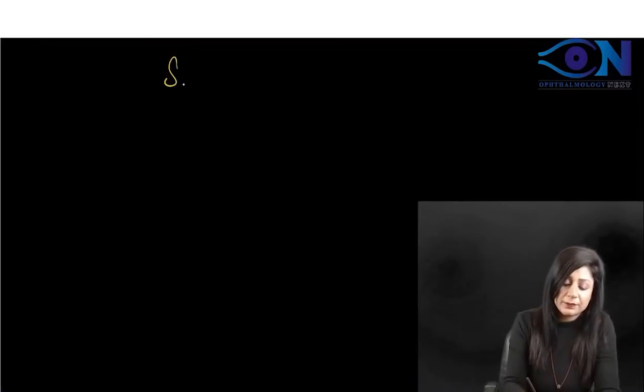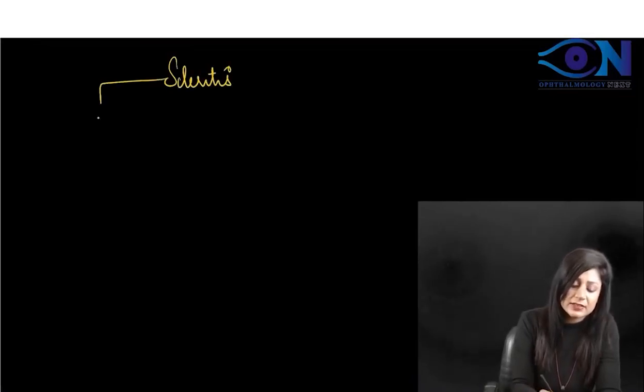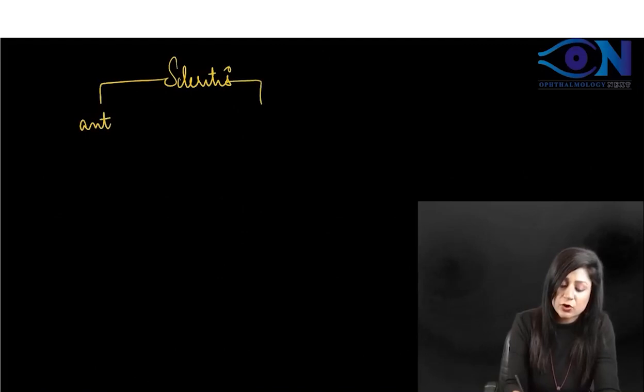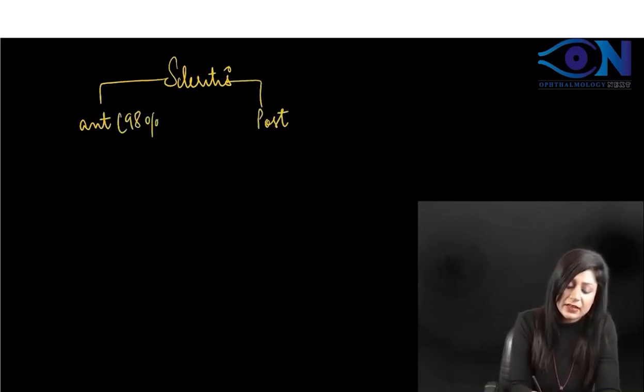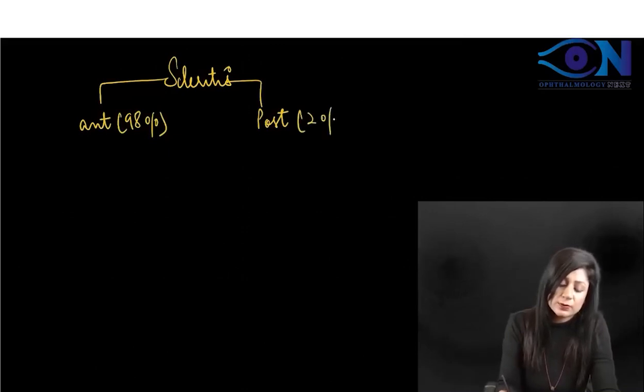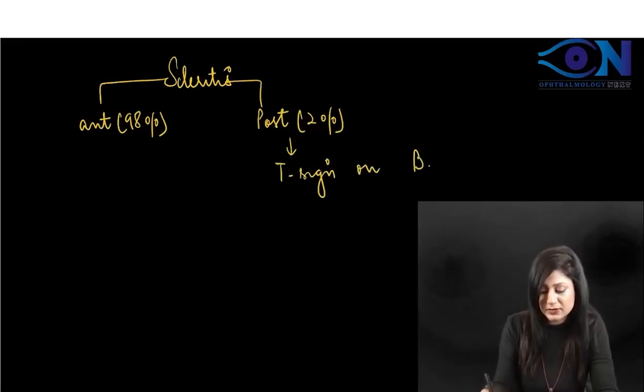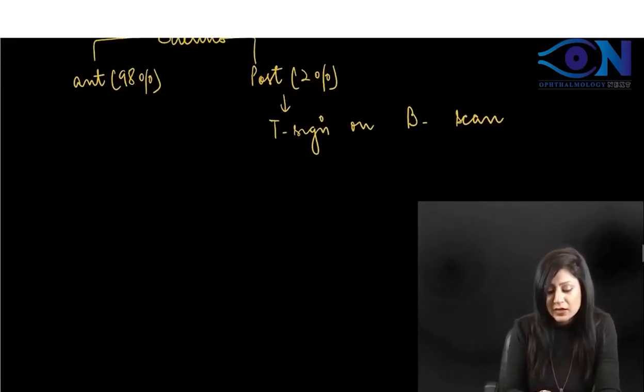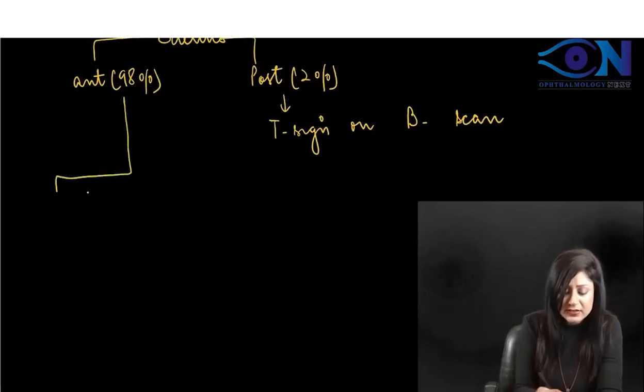If you look at the classification of scleritis, it can be anterior or posterior. Anterior is present in 98%, posterior only in 2%. Posterior scleritis gives the typical T sign on B-scan ultrasound. Now, anterior scleritis can be of two types.